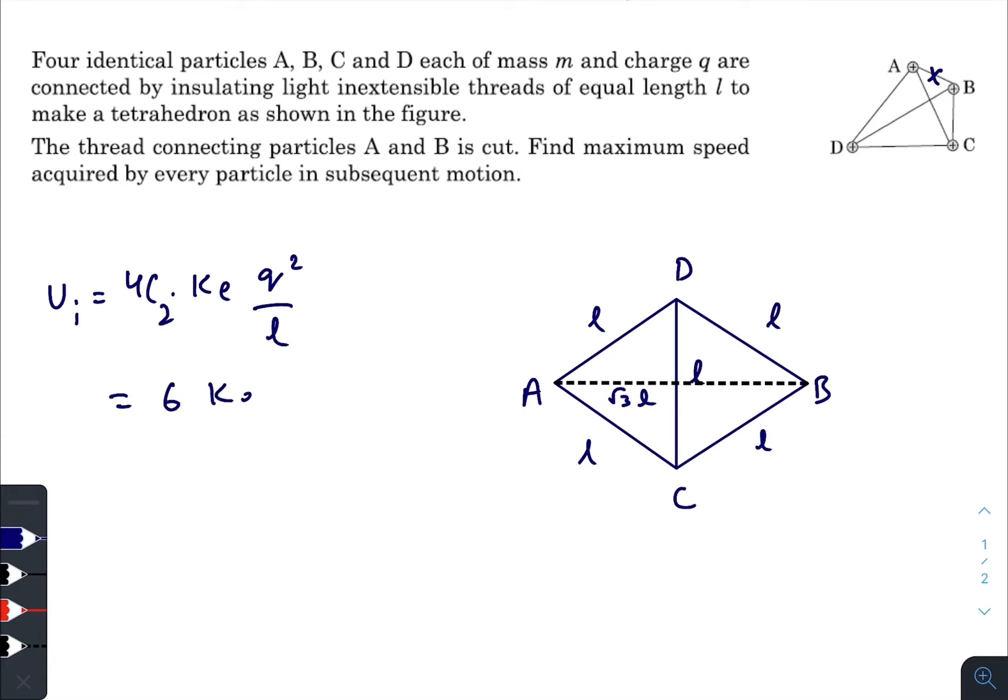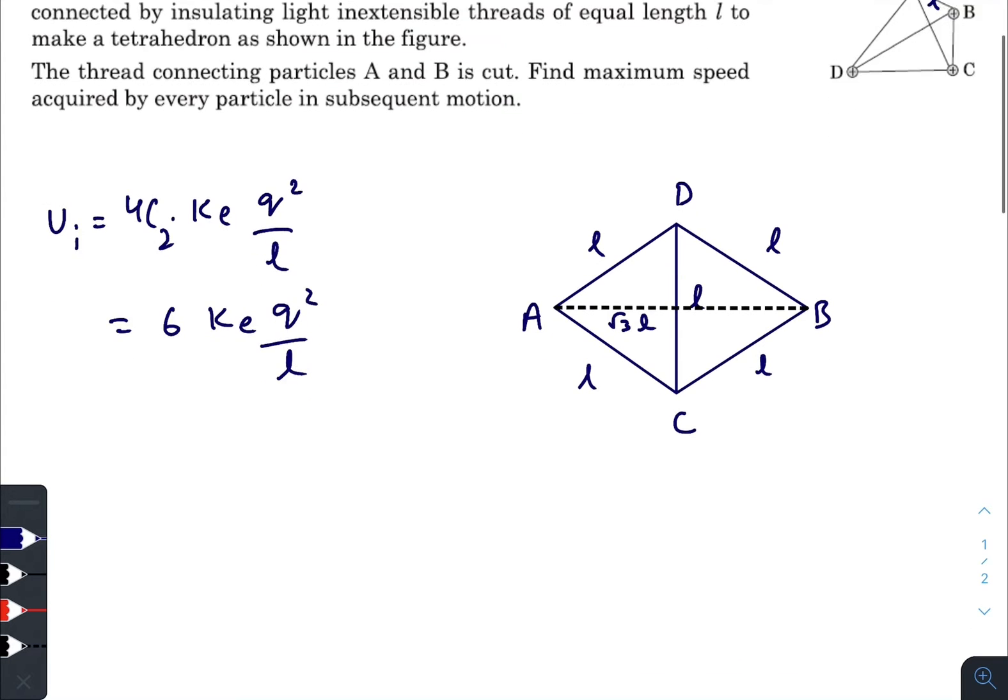q squared divided by l. Final potential energy will be 4 times, due to this 4 pairs, ke q squared divided by l, plus this pair and this pair.